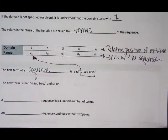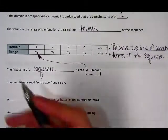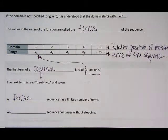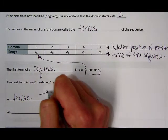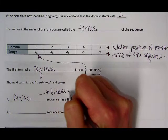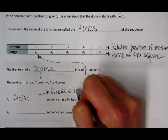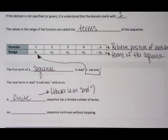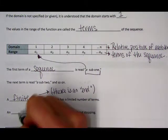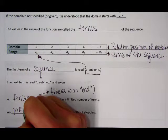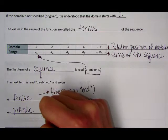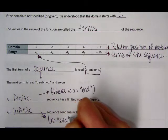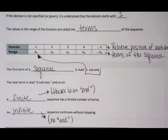There's two types of sequences that we're going to talk about today. The first is called a finite sequence. Obviously, finite means there is an end. You have a limited number of terms that are given. In an infinite sequence, obviously, there is no end. That's a sequence that continues without stopping.